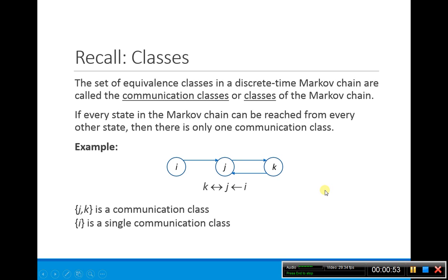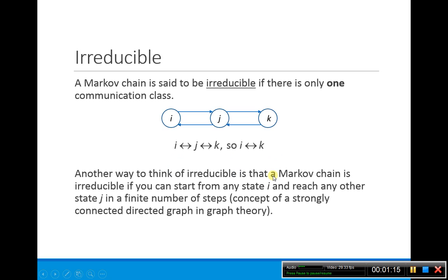We also talked about communication classes, sometimes called just classes of the discrete time Markov chain. In this example, I is its own single communication class, but J and K are accessible to each other, so they communicate and are in the same communication class.